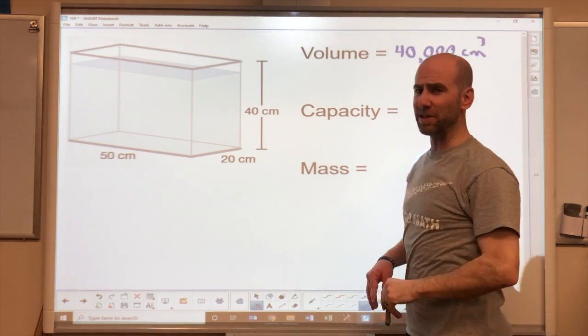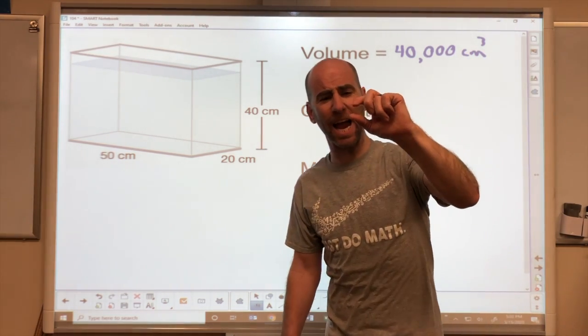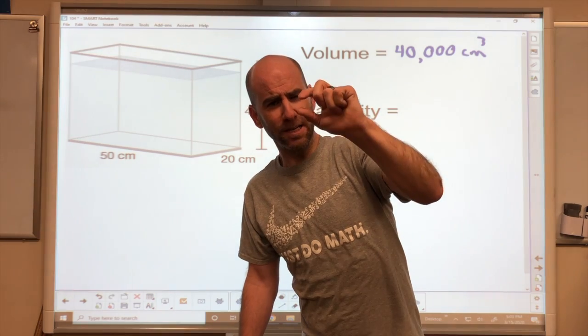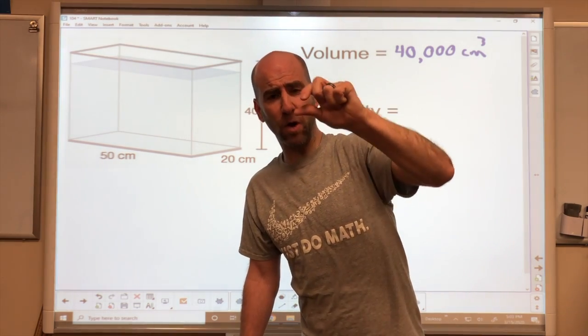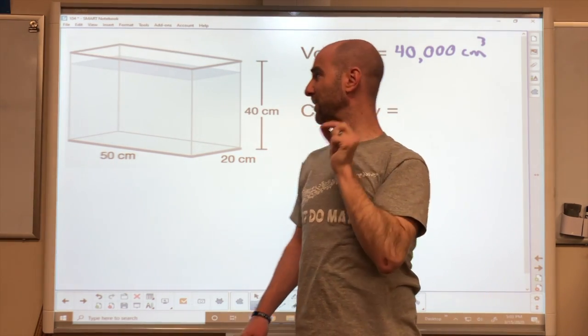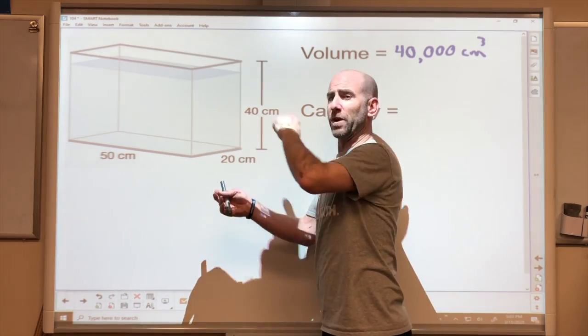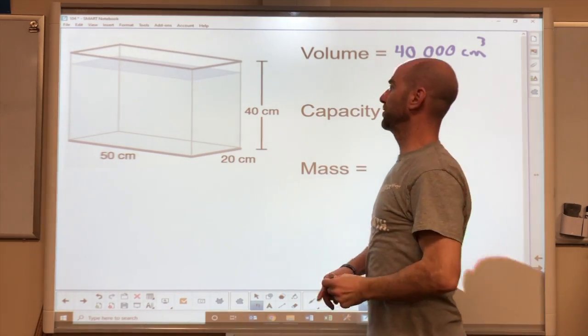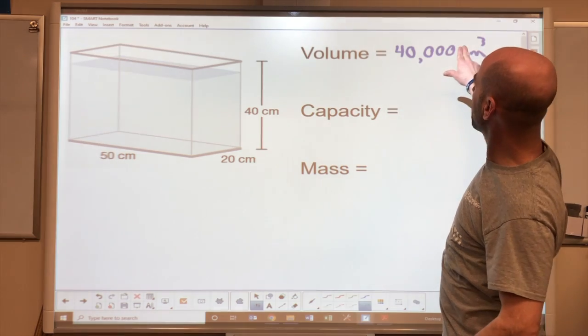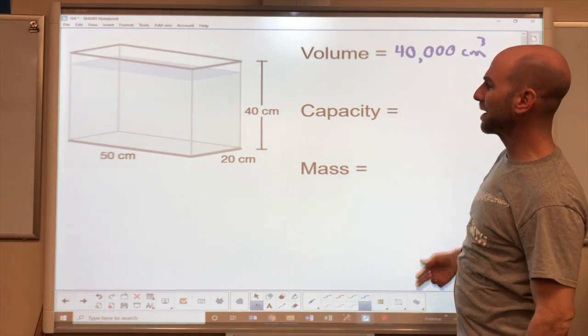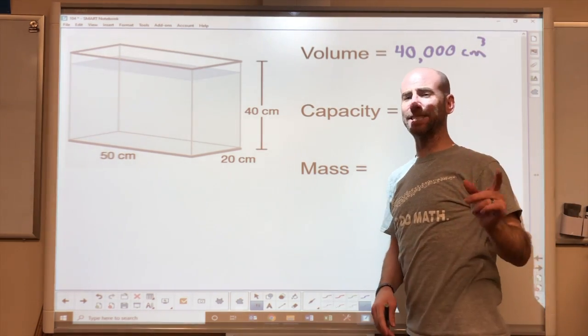In other words, if I had a little tiny cubic centimeter, or a little cube, I could fill up this fish tank with 40,000 of those. So now it's on you to convert the volume into capacity. So take a second and do that.